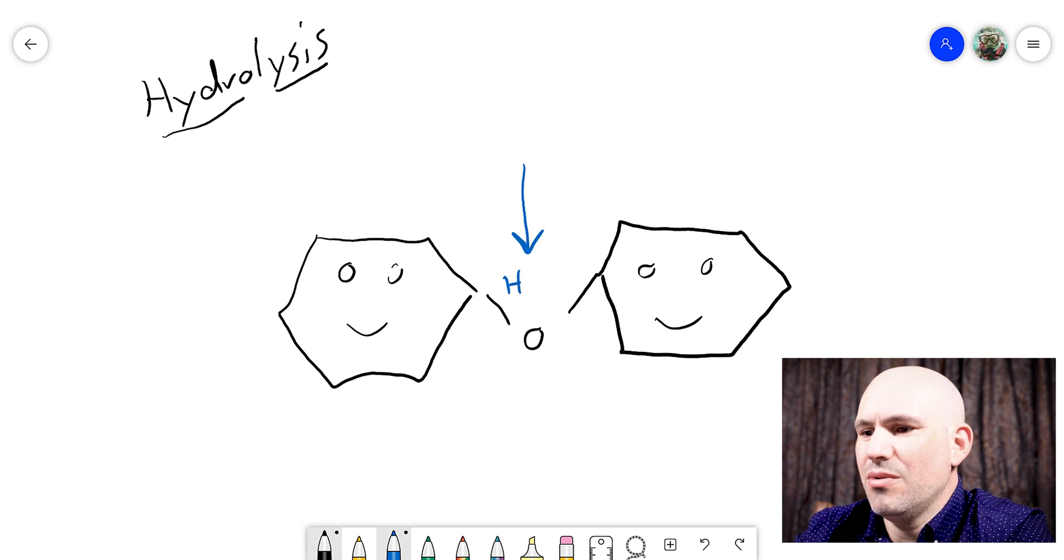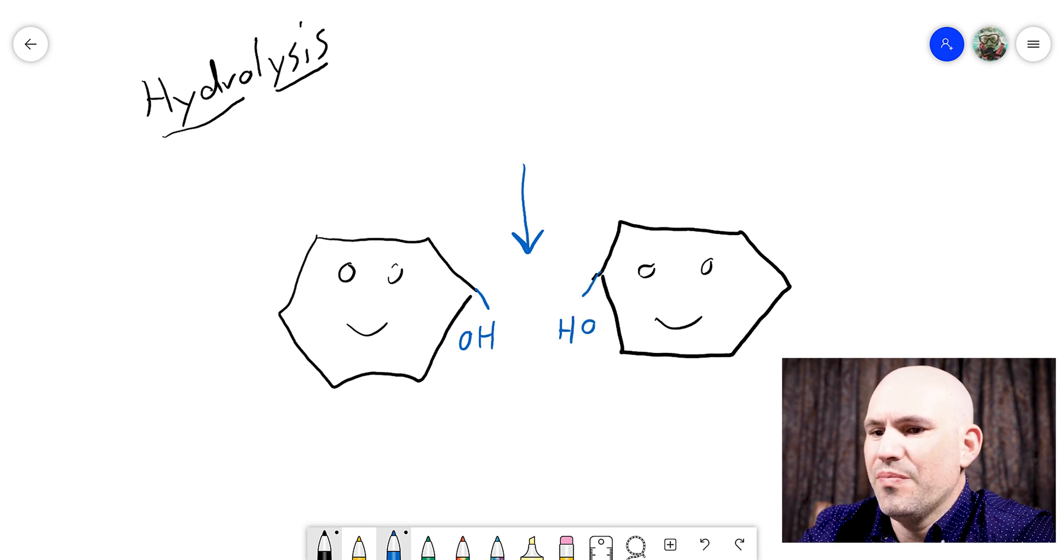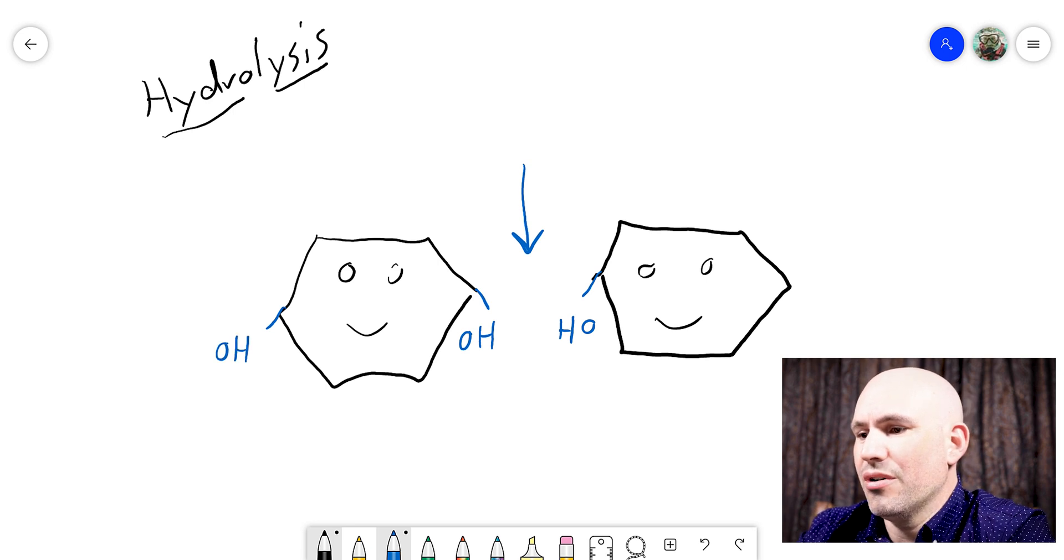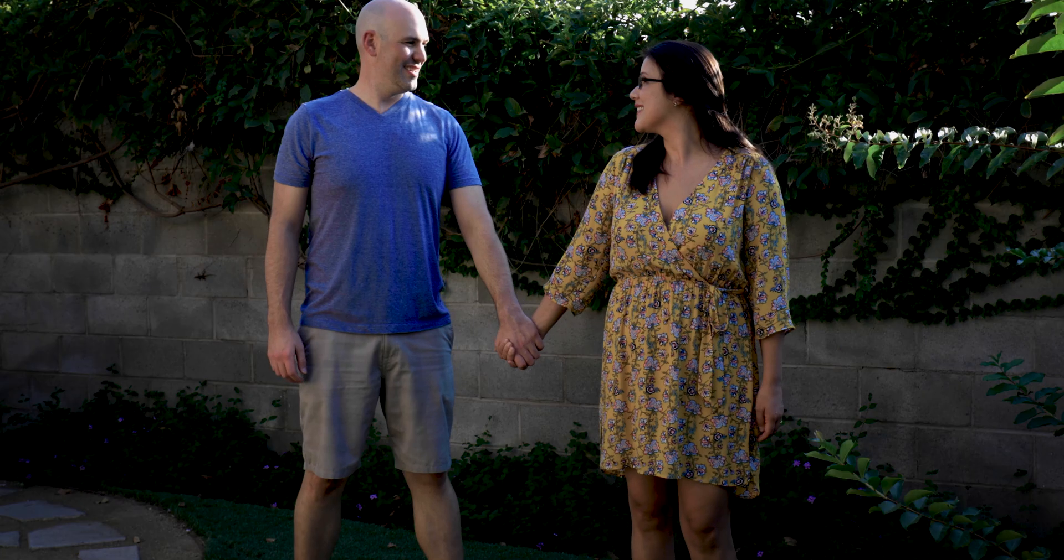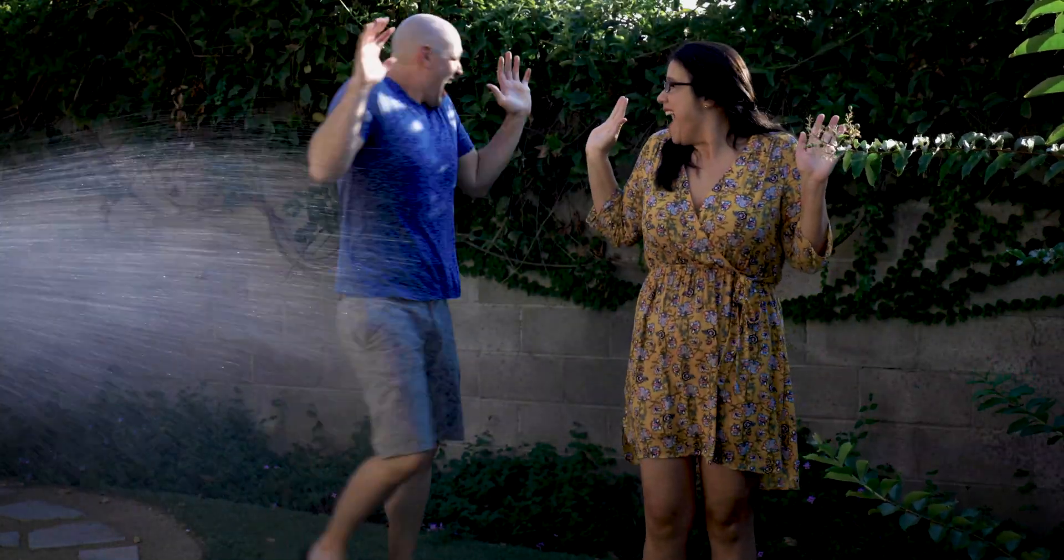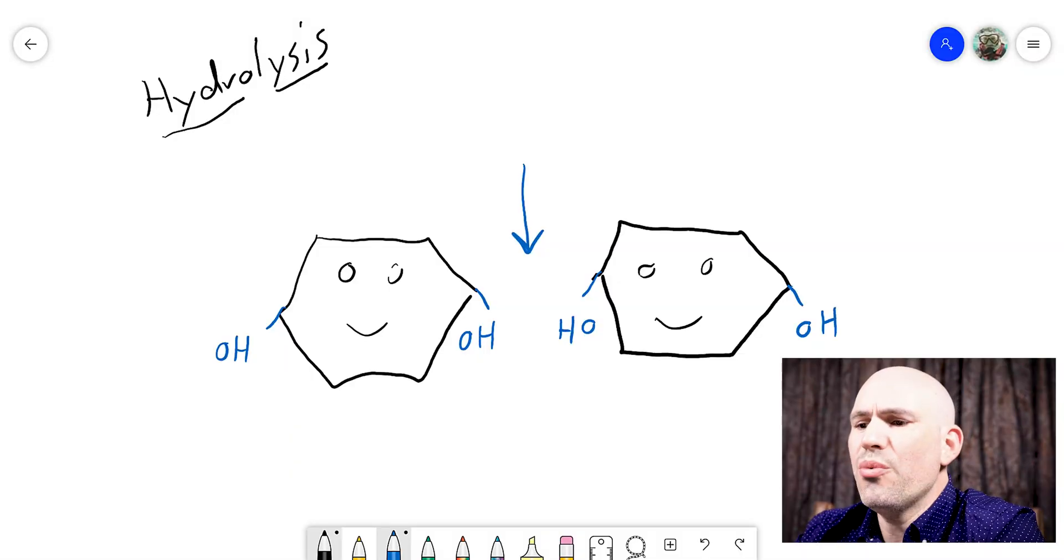And so if you add an H2O, what's going to happen is they're going to take that H2O and they're going to separate back into their two hydroxides. And so now you have two monomers. They're no longer connected. They are no longer a polymer. So the way that we separate polymers into monomers is with hydrolysis. And the way that we connect monomers together to make a polymer is dehydration synthesis.